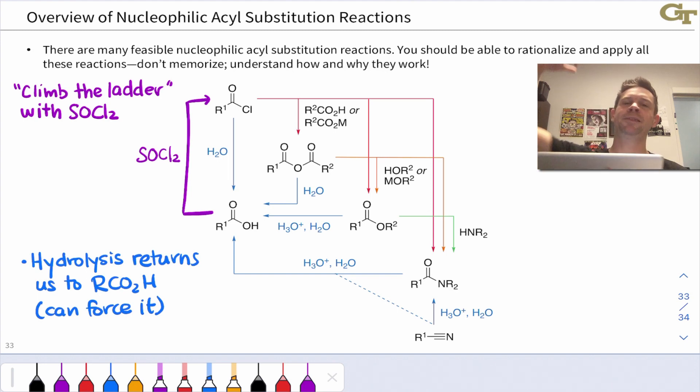And then to climb the ladder, so to speak, climb the reactivity ladder, we can convert that carboxylic acid into an acyl chloride using SOCl2. So that's kind of a general two-step process to get back to a highly reactive state, regardless of which carboxylic acid derivative you're looking at.